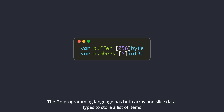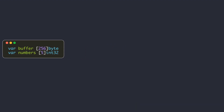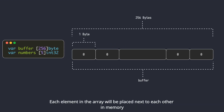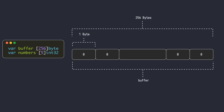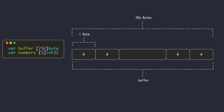The Go programming language has both array and slice data types to store a list of items. An array is a contiguous block of memory where each element is placed next to each other in memory. The buffer variable is an array of 256 bytes, and the memory layout of this variable will look like this. Go initializes the memory of all variables to its zero value — in this case, all 256 bytes will be set to zero in memory.